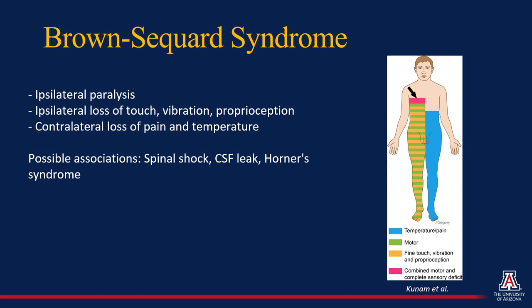Again, Brown-Séquard syndrome is characterized by ipsilateral paralysis, ipsilateral loss of touch, vibration, and proprioception, as well as a contralateral loss of pain and temperature sensation. There are some associations which occur with Brown-Séquard syndrome sometimes. These include spinal shock, which can happen anytime the cord is injured; CSF leak, which can happen whenever there's a dural tear; as well as Horner syndrome, which can happen when there's injury to the spine at high levels of the spinal cord.